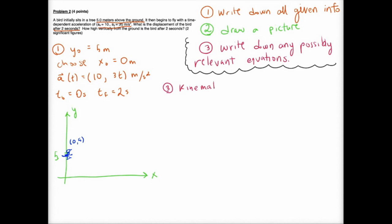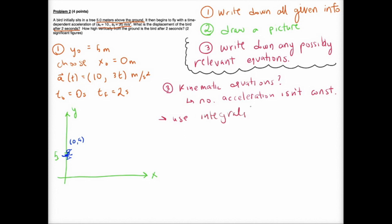Number three is to write down any possibly relevant equations. When you're doing this step it's good to just brainstorm every equation you could possibly use because it can be a really nice reference. In this case you might think that we would want to use the kinematic equations, but this is one of the trickiest parts of the problem — realizing that we actually can't use the kinematic equations because we don't have a constant acceleration. The kinematic equations only work when your acceleration is constant, including if you have no acceleration.